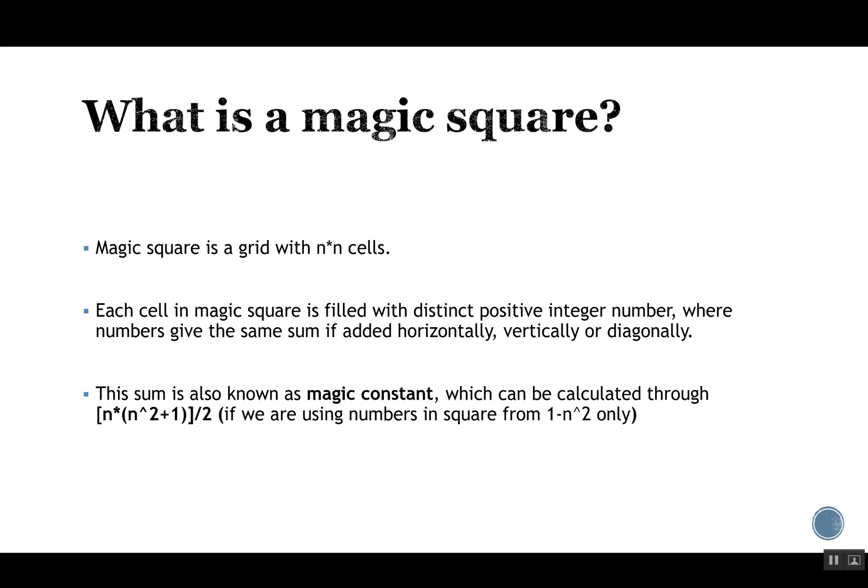So let's see what is a magic square. A magic square is a grid with n×n cells. Each cell is filled with distinct positive integers where the numbers give the same sum if added horizontally, vertically, or diagonally. This property is what makes the magic square magical.